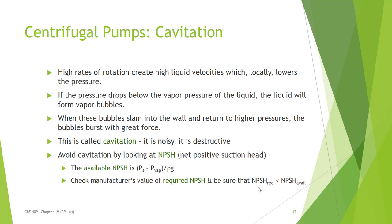Centrifugal pumps are great and we use them all the time, but they have a really serious problem: cavitation. When you have high rates of rotation, you get high liquid velocities, which can, at a single spot, immediately lower the pressure. If that pressure drops below the vapor pressure, it's going to form a vapor bubble. When that vapor bubble reaches a wall — the impeller vanes or the pump casing — it slams into it with great velocity and bursts with great force. This is incredibly noisy, destructive, and it's called cavitation.